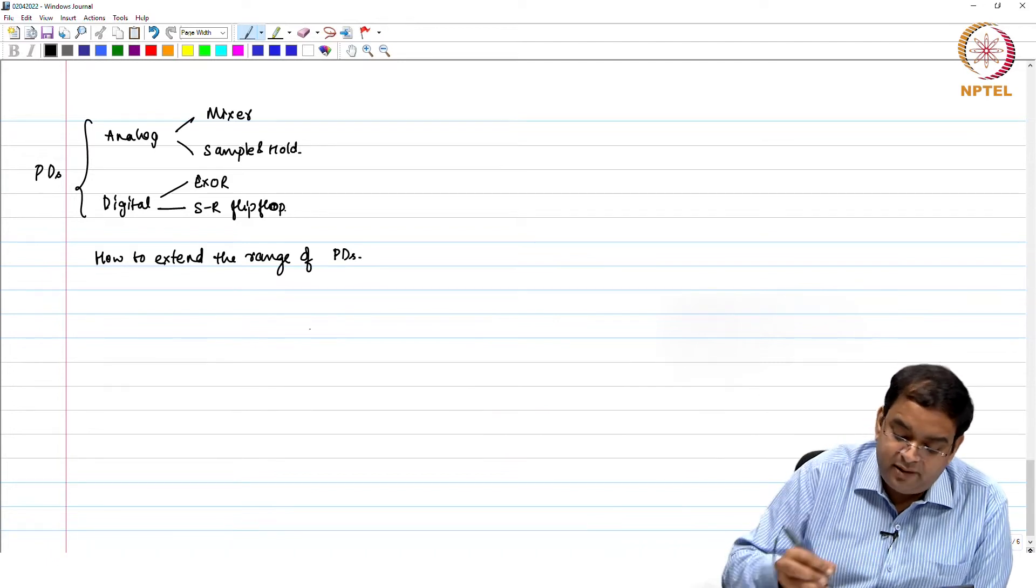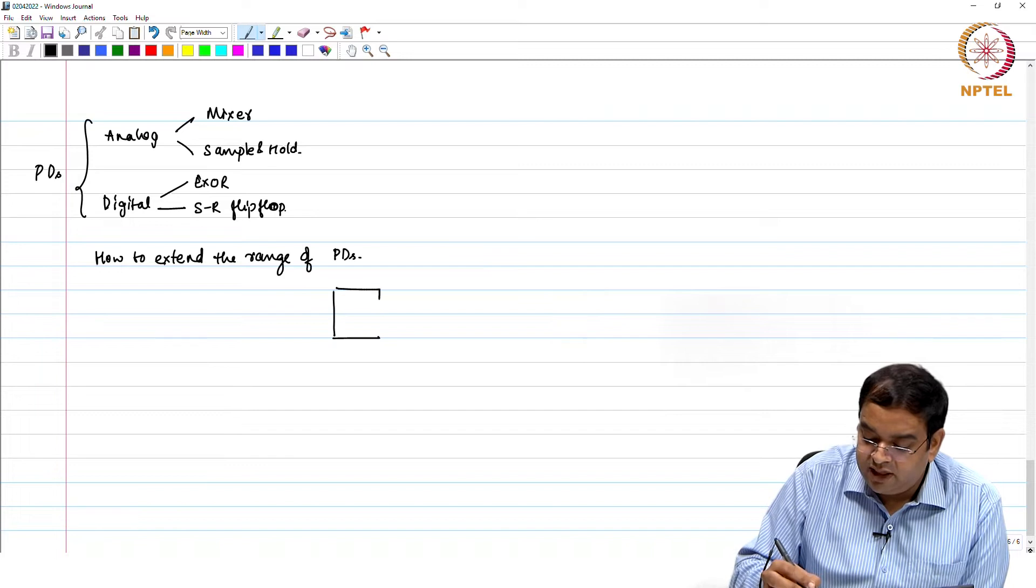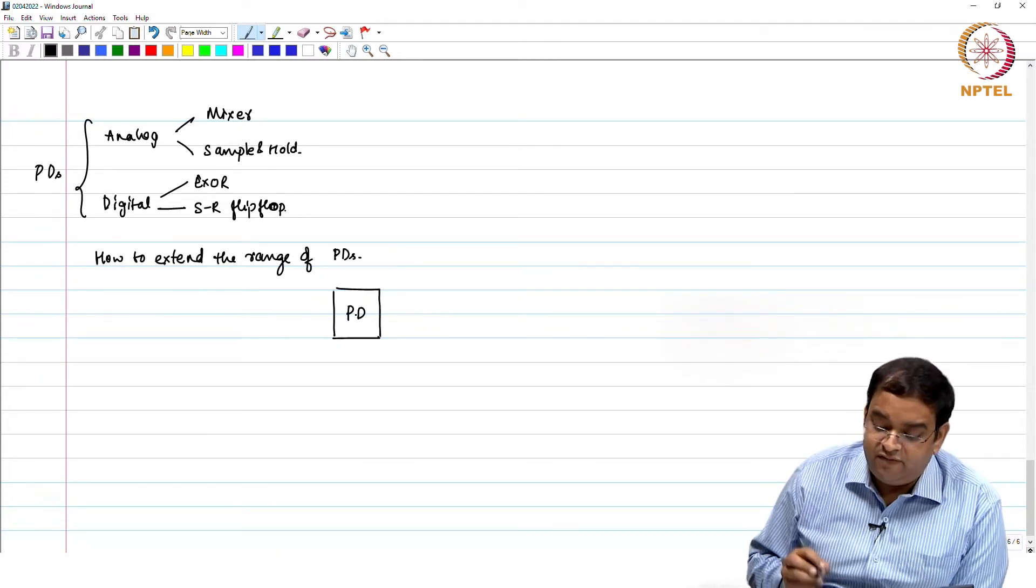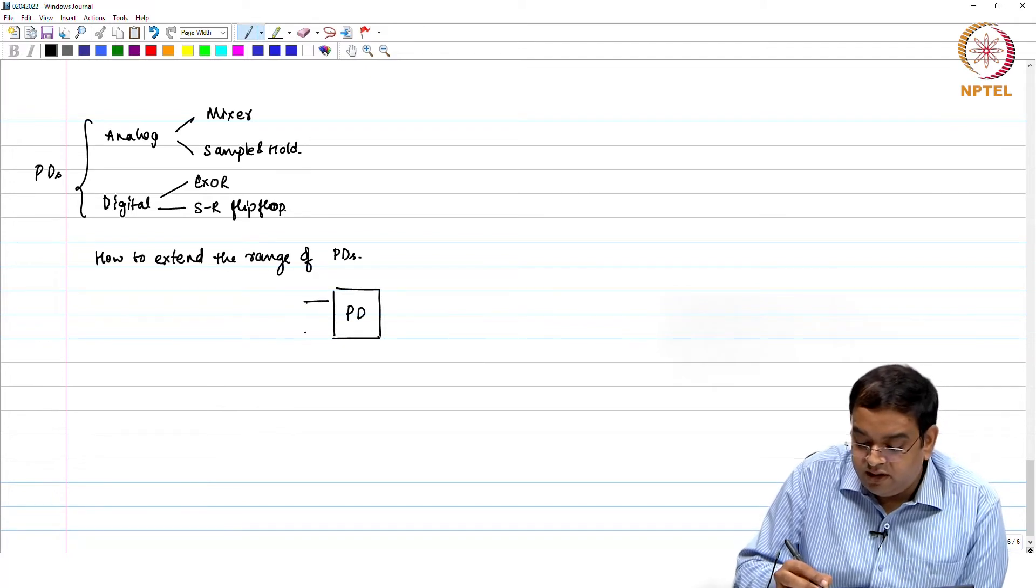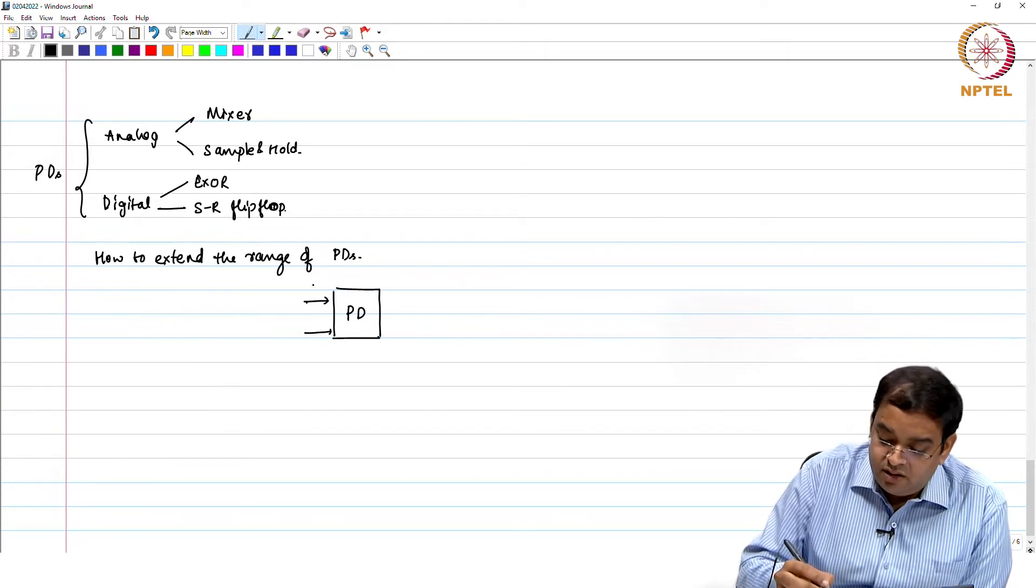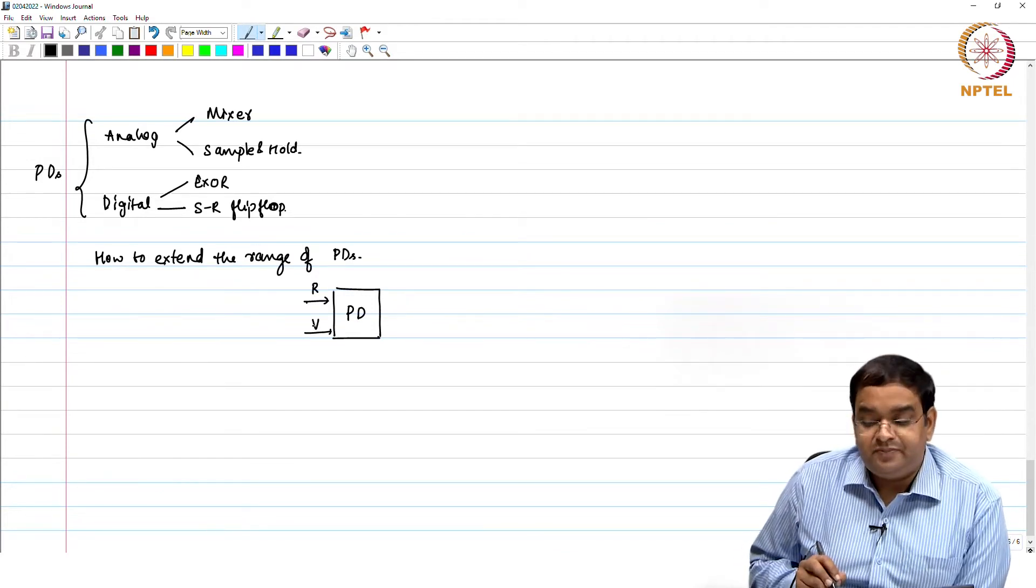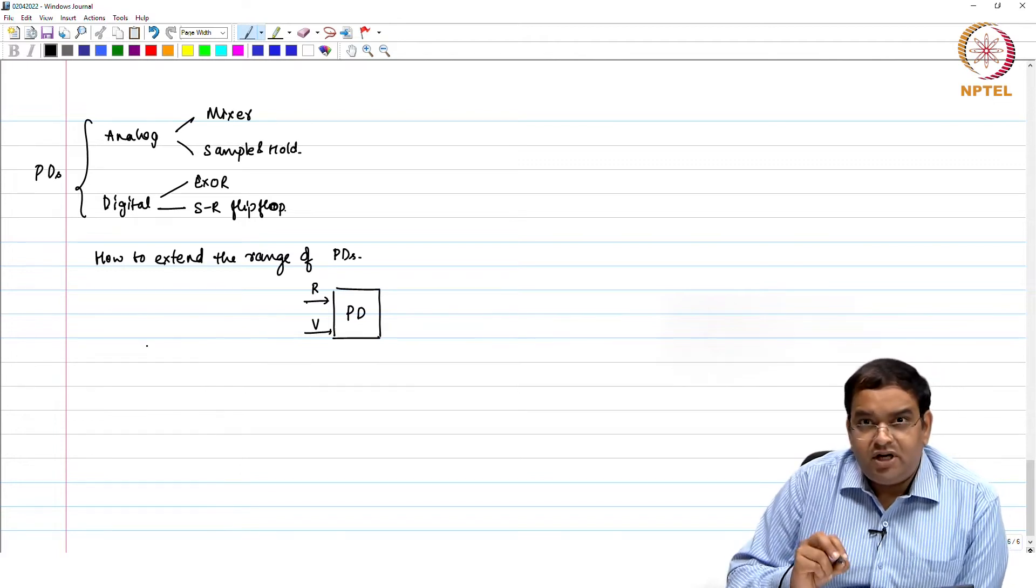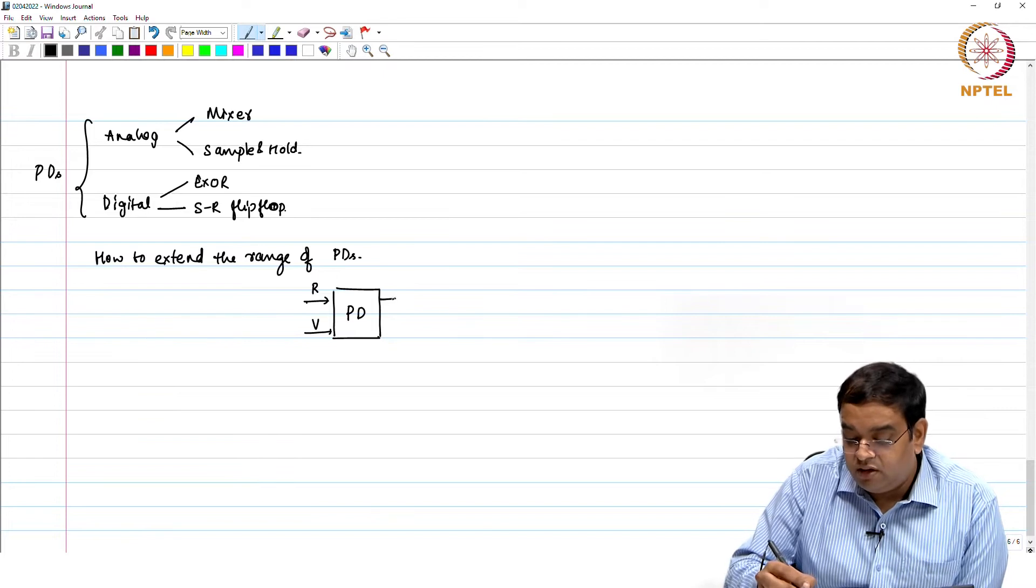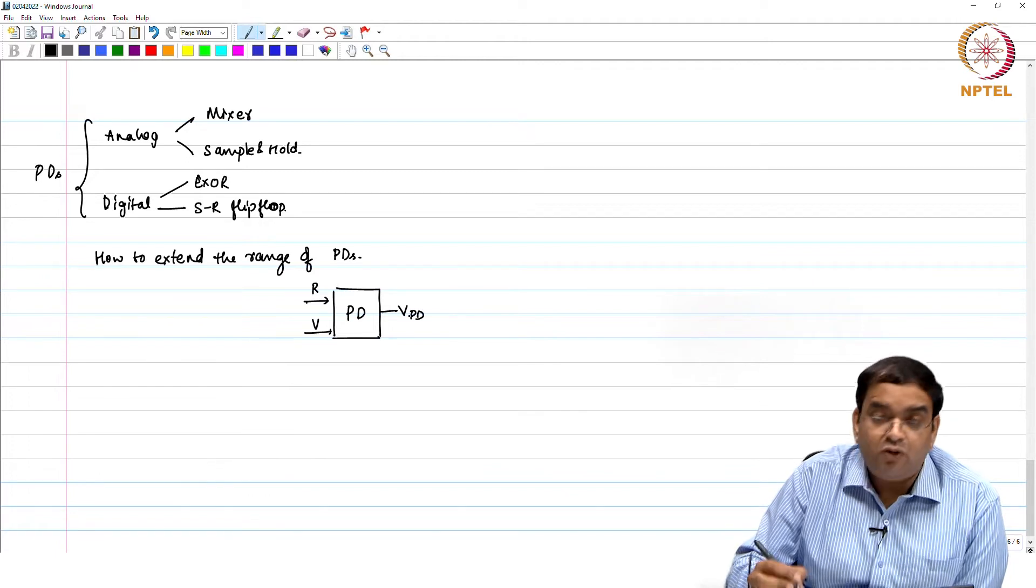For example, you have your PD, I will just draw it as a block. It can be your XOR gate, it can be your SR flip-flop here. We are just right now looking at square waves, so I will limit myself to digital. This is R and V, and we are talking about the clocks which are having the same frequencies for now. So it gives you Vpd output.